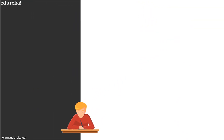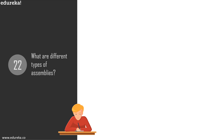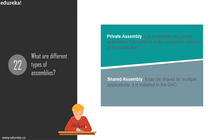Question 22: what are the different types of assemblies? There are private assemblies and shared assemblies. A private assembly is only accessible to the application and is installed in the application's installation directory. A shared assembly can be shared by multiple applications and is installed in the GAC (Global Assembly Cache).